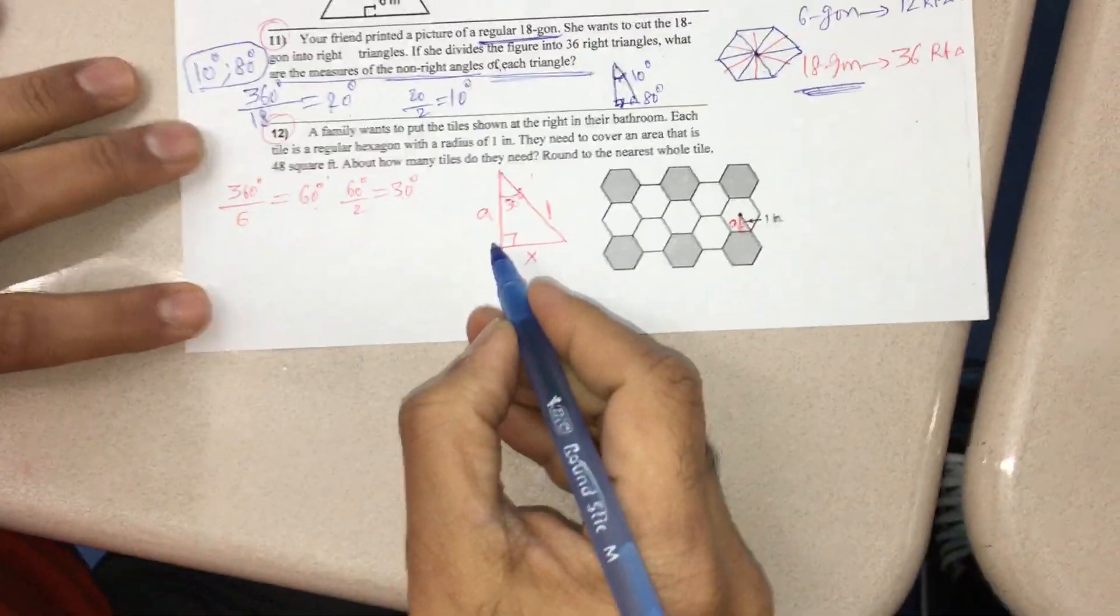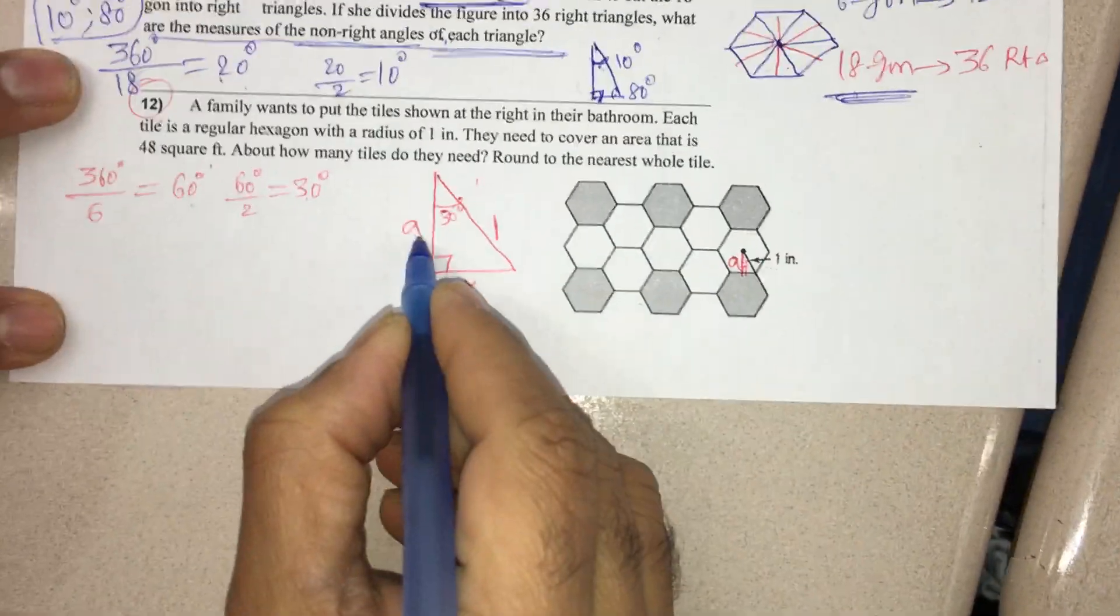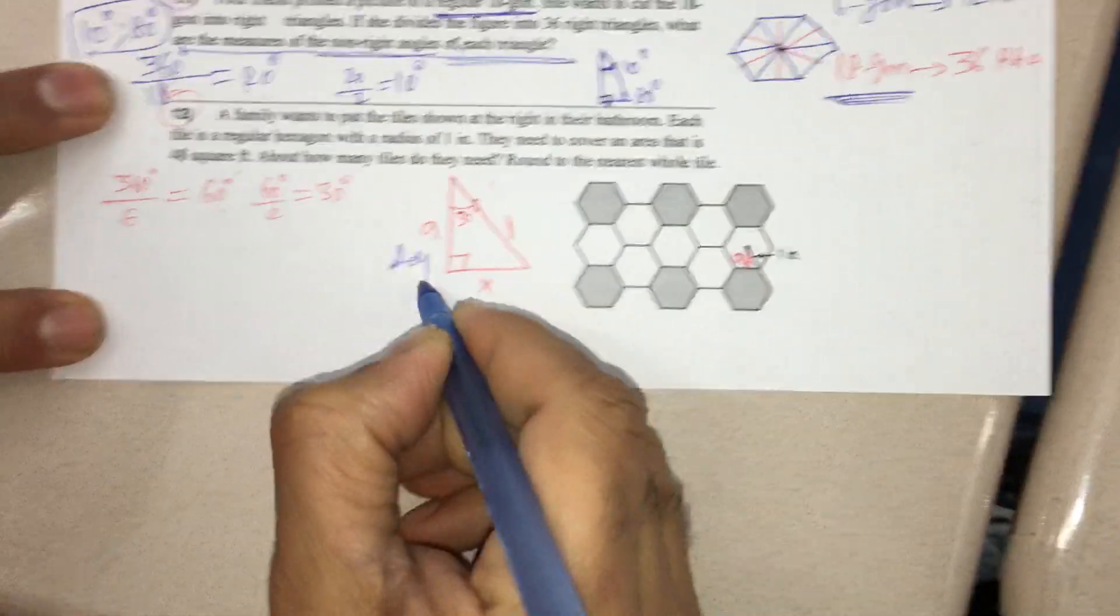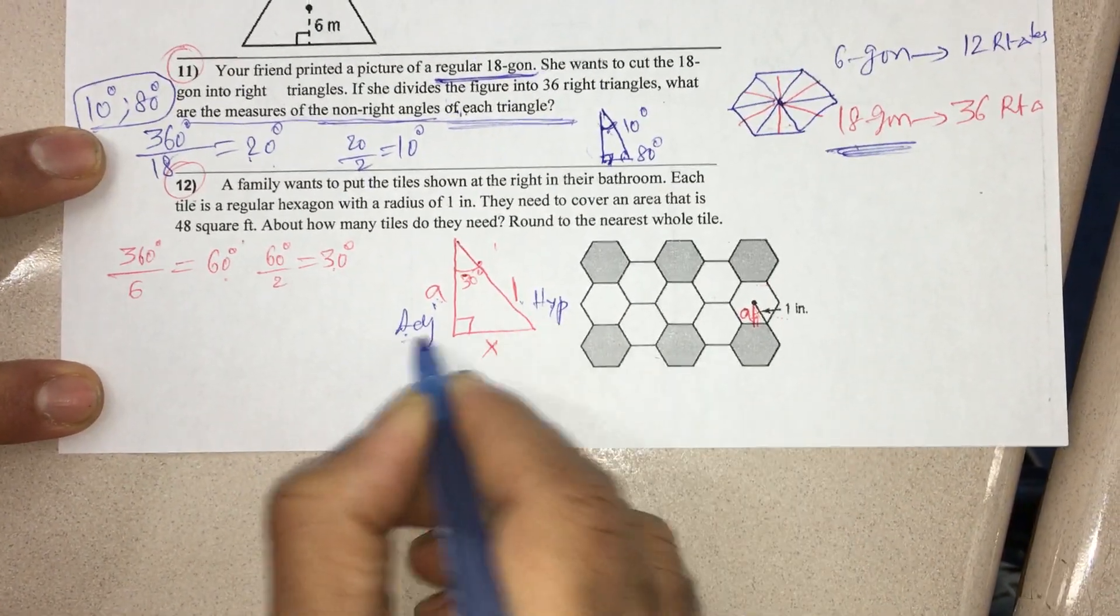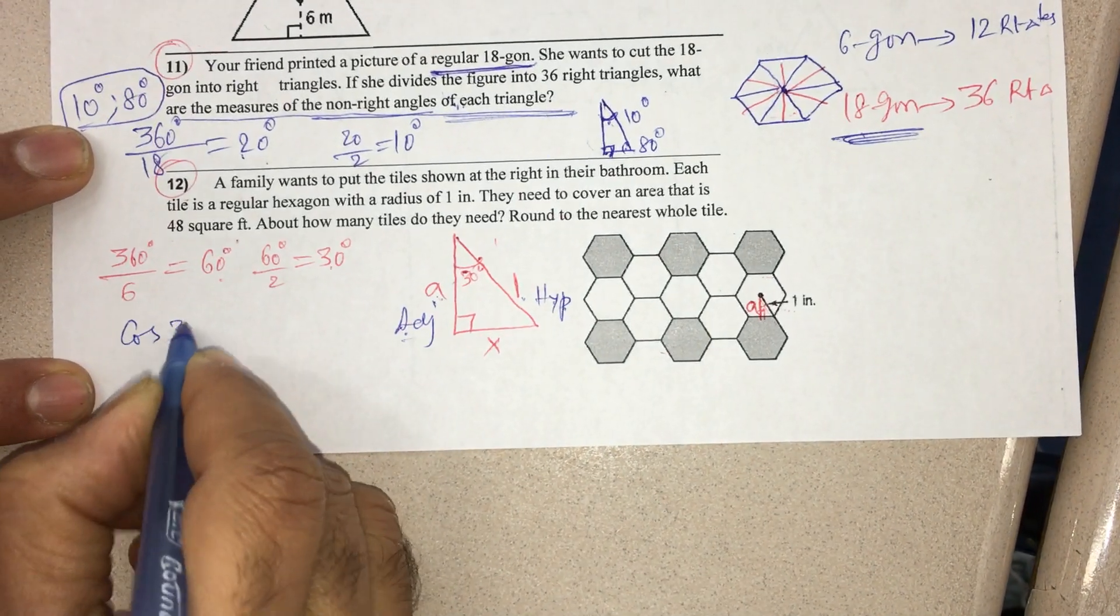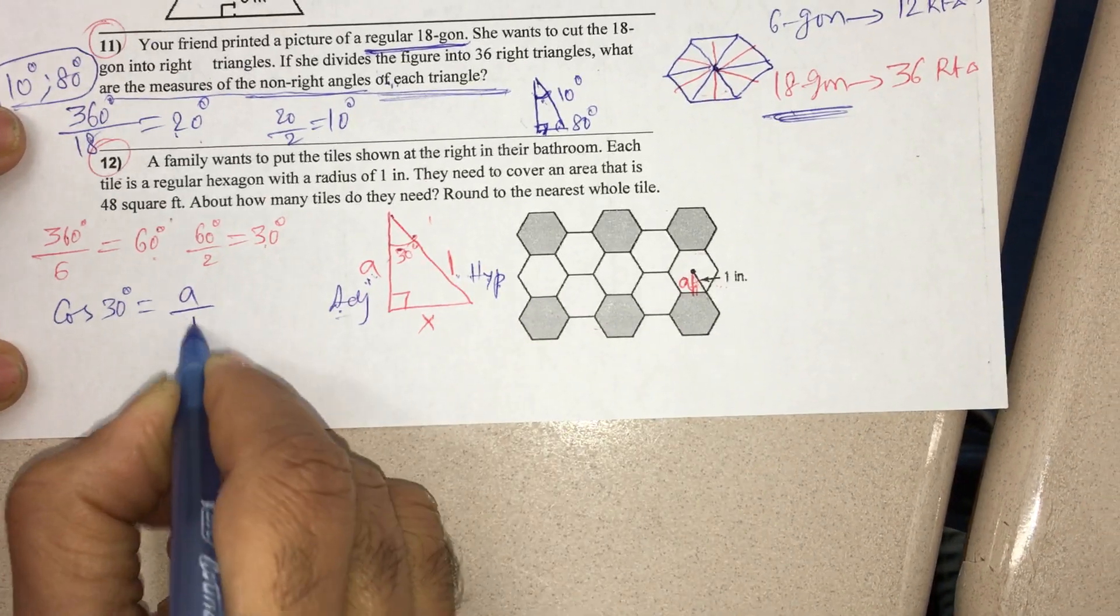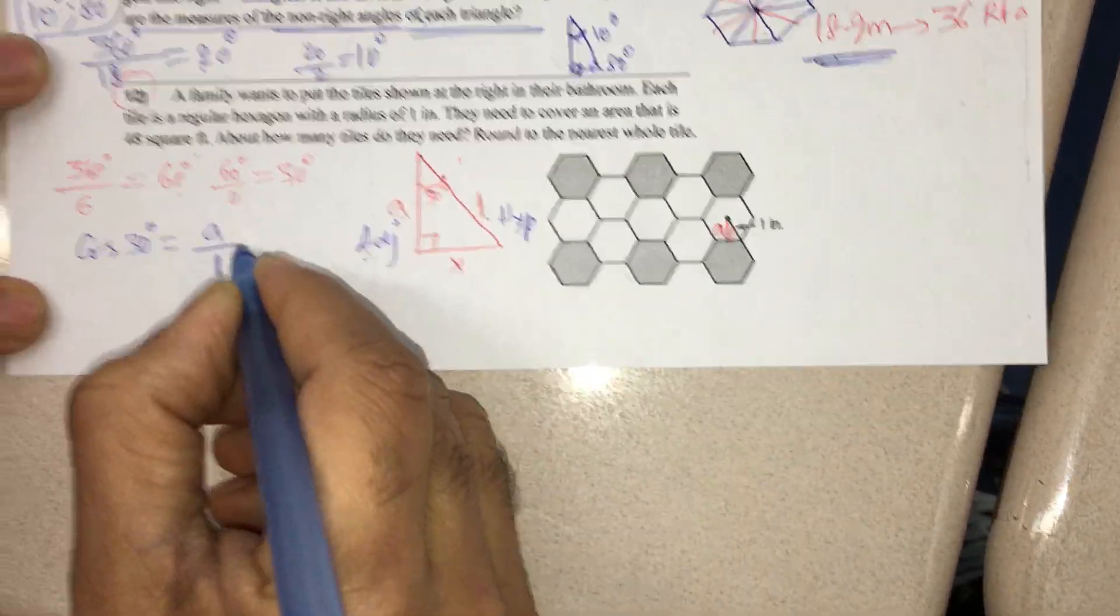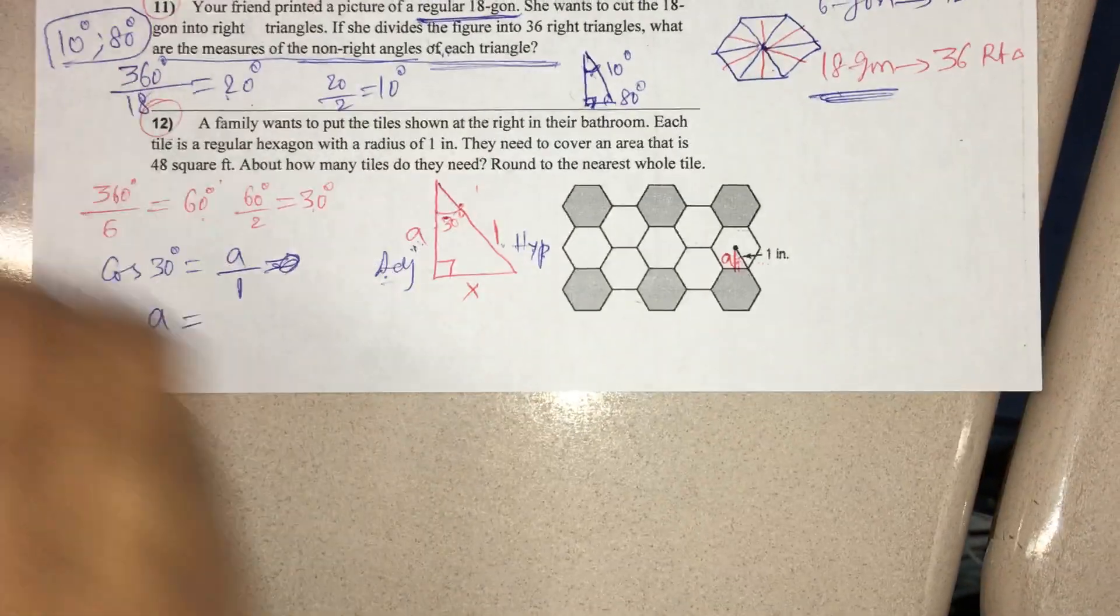I can first calculate A. For that, this is the adjacent side and this is the hypotenuse. Adjacent and hypotenuse are connected by cosine. So cos 30 degrees equals adjacent side over hypotenuse. Thereby I get A.